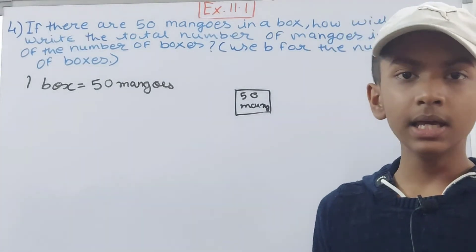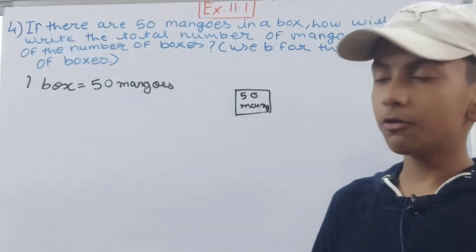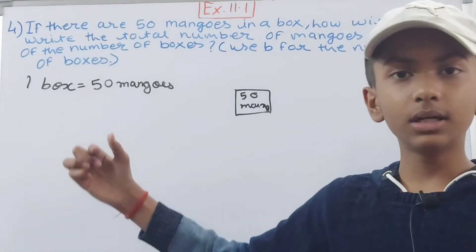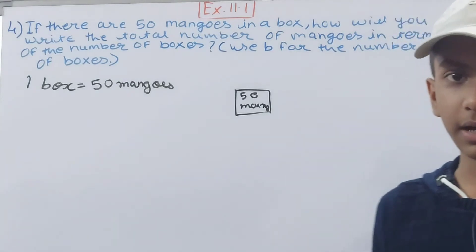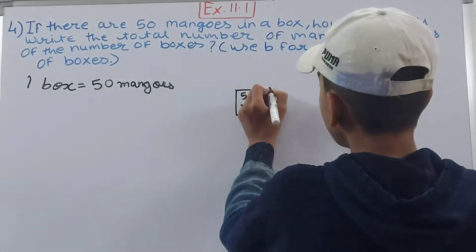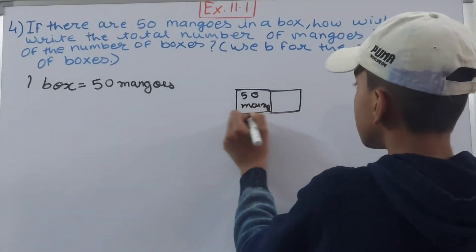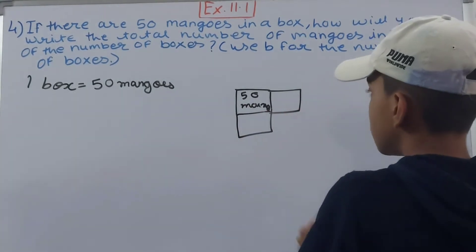In this case, you will multiply 50, which is the number of mangoes in one box, by the number of boxes which you have. So suppose if you are having one box, then two boxes, and then three boxes...